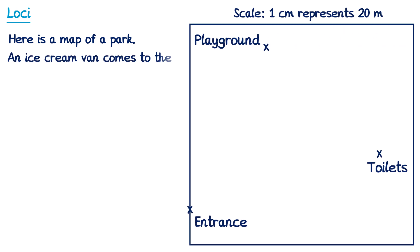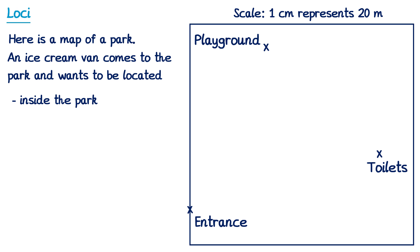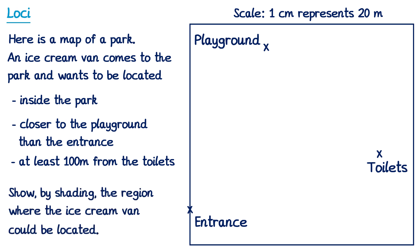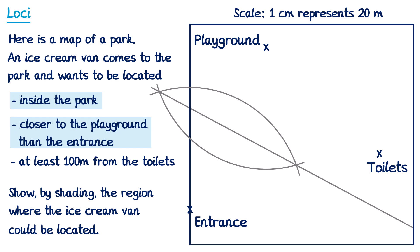For the final question: here's a map of a park. An ice cream van wants to be inside the park, closer to the playground than the entrance, and at least 100 metres from the toilets. The first condition means we're inside the square boundary. For closer to the playground than the entrance, we construct the perpendicular bisector between the playground and the entrance. Points above this line are closer to the playground, so the van must be in that region.